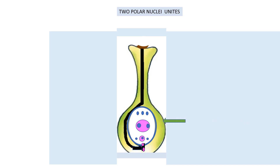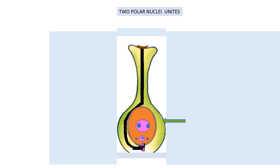This arrow shows the ovary. This highlighted part is the ovule, and inside the ovule, this is the embryo sac. Antipodal cells have no function in fertilization, so do not focus on them. The synergid function is to guide the entry of the pollen tube.